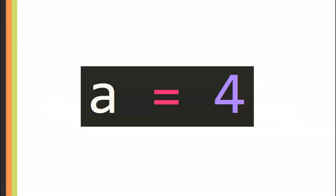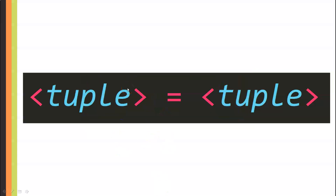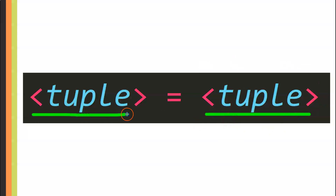Typically, the assignment statement we work with has a single value assigned to a single variable using the assignment operator — the equal sign. But now, we are going to work with tuples. We will have one tuple on the right-hand side of the assignment statement and another tuple on the left-hand side, still connected by the assignment operator.